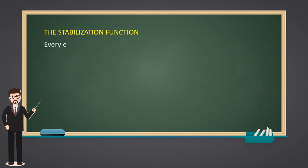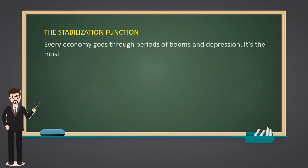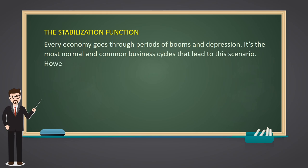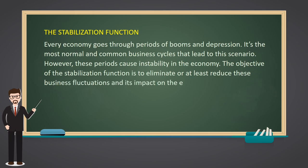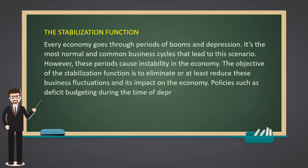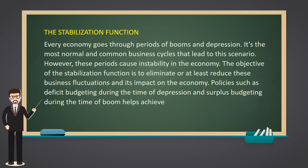The Stabilization Function: every economy goes through periods of booms and depression. These are the most normal and common business cycles. However, these periods cause instability in the economy. The objective of the stabilization function is to eliminate or at least reduce these business fluctuations and their impact on the economy. Policies such as deficit budgeting during the time of depression and surplus budgeting during the time of boom help achieve the required economic stability.